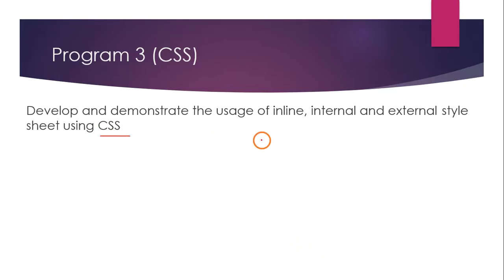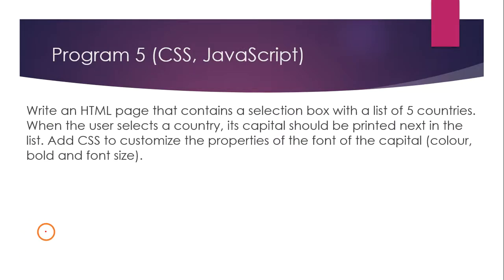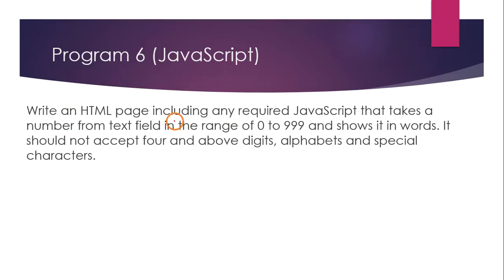The third program uses CSS — which has three levels: inline, internal, and external — to style a web page. Program four again uses JavaScript to work with alert boxes, which are pop-up boxes, with four sub-tasks. Program five uses HTML and CSS with a selection box that displays five country names; when the user selects a country, for example India, its capital should be displayed with specific color, bold, and font size applied using CSS.